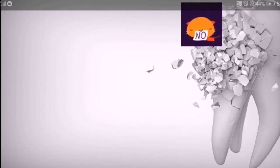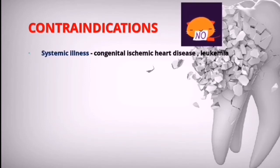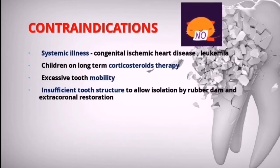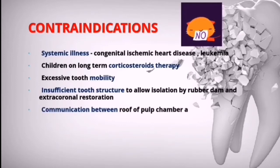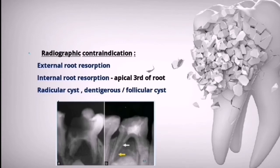Now let's see the contraindications for pulpectomy. The first is systemic illness — if the patient has congenital ischemic heart disease, leukemia, or if the child is on long-term corticosteroid therapy. Other contraindications include excessive tooth mobility, insufficient tooth structure to allow isolation by rubber dam and extra-coronal restoration, and communication between the roof of the pulp chamber and the furcation region, as the prognosis in furcation involvement is very poor.